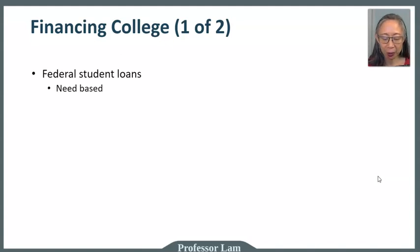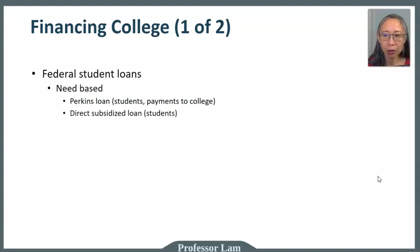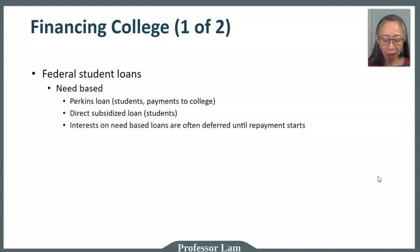There are need-based loans. These are based on your family's income or your own income. These include Perkins loans, which are issued to students and paid directly to the college. Direct subsidized loans are also loans to students and they are paid directly to students. All these need-based loans are based on your financial need.